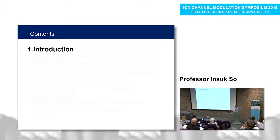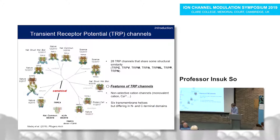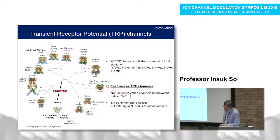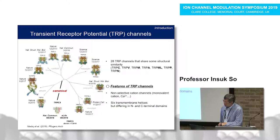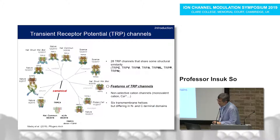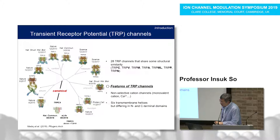I'll present the following topics. First, I'll talk about the TRPC channel briefly. TRPC channel is a non-selective cation channel. It consists of six transmembrane domains with N-terminus and C-terminus located within the cytoplasm. According to sequence homology, TRPC channels are classified into seven sub-families.